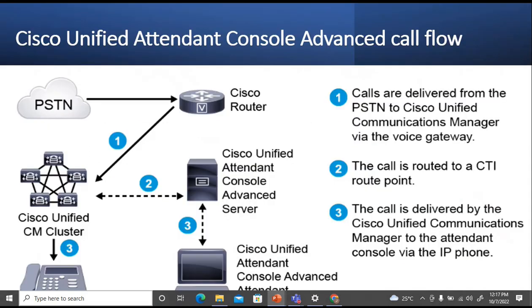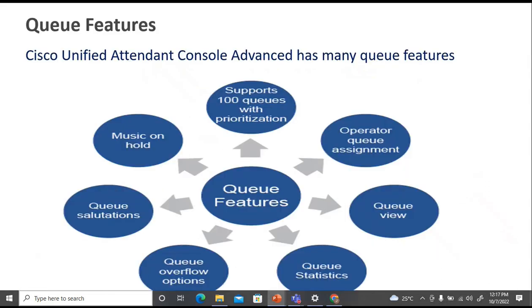The Cisco Unified Attendant Console Advance call flow works in this order: calls are delivered from the PSTN to CUCM via the voice gateway — a Cisco router. The call is then routed to the CTI route group, which is configured in CUCM. From there, the call is delivered by CUCM to the Attendant Console via IP phone, and from the Attendant Console it is added to the IP phone.